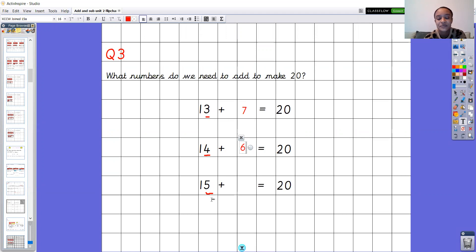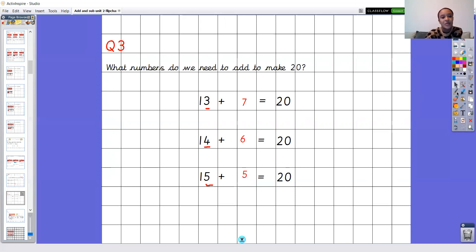And finally we've got 15. One ten and five ones. If we've got five ones we want to get to 10. What do we add? We add five. So if we want to add to 15 to get 20 we add the number five. Brilliant.